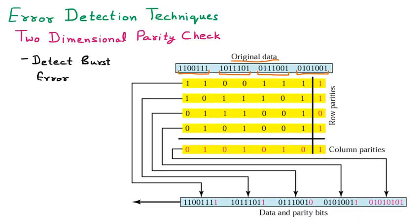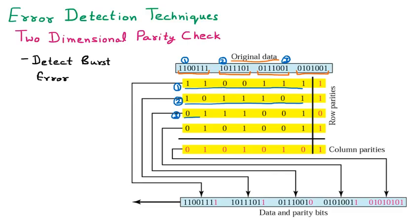The first block is taken and we can see it contains: 1 1 0 0 1 1 1. Then the second block of data is taken. The third block is taken next: 0 1 1 1 0 0 1. Then the fourth block is taken: 0 1 0 1 0 0 1.